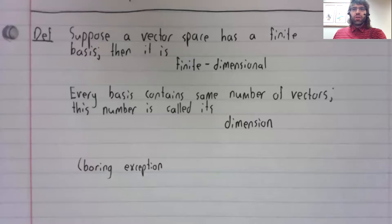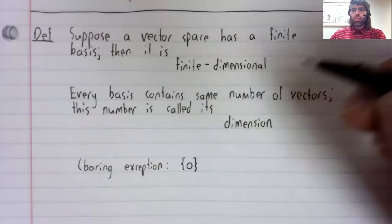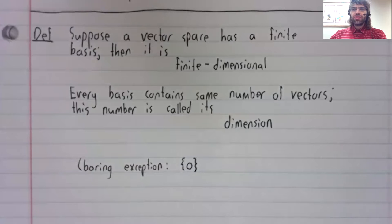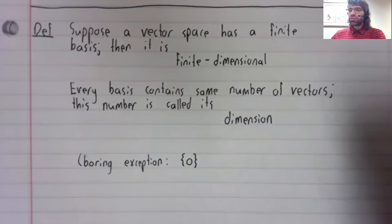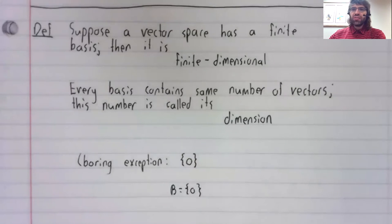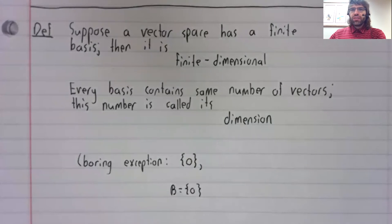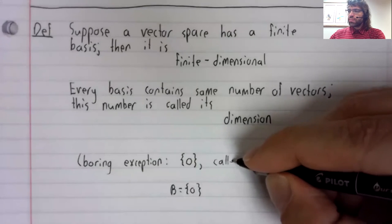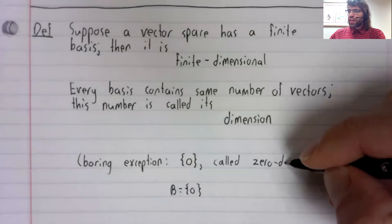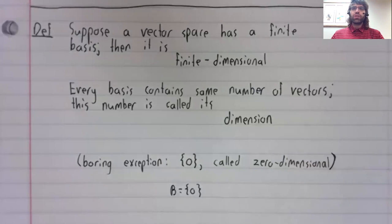There is one kind of boring exception to this. Boring because the vector space is uninteresting and we never look at it. But the trivial vector space consisting of the zero vector and nothing else. Well, the basis of this vector space has one vector in it, the zero vector. In spite of its basis having one vector, this vector space is said to be zero dimensional.